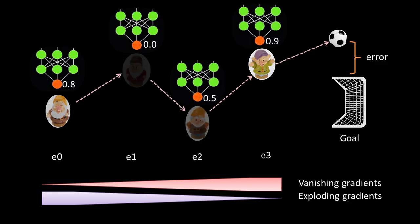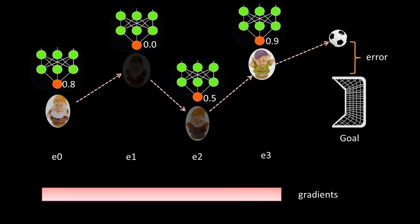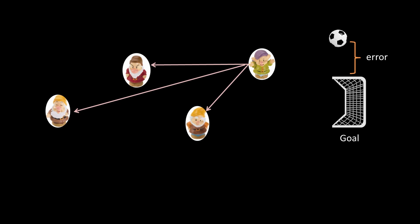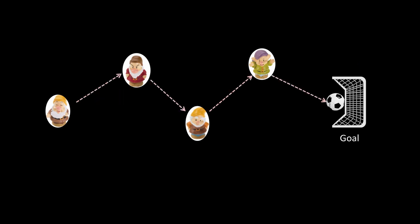An interesting solution to vanishing gradients comes from LSTMs. The basic idea is to gate the inputs with a separate network that learns to re-weight the inputs according to their significance. We can reduce the number of steps by attenuating the non-significant parts — hence we can pay attention to the more important parts.